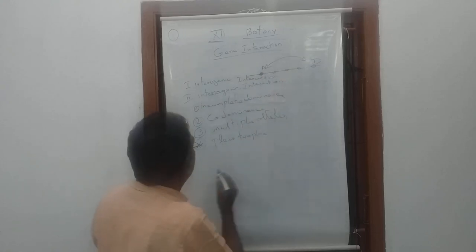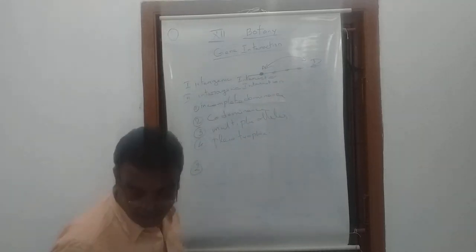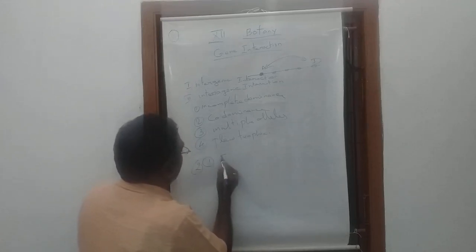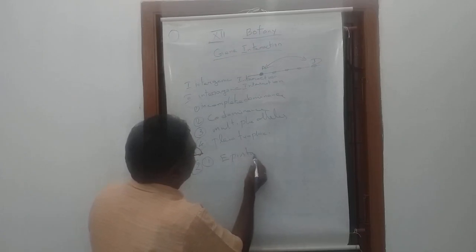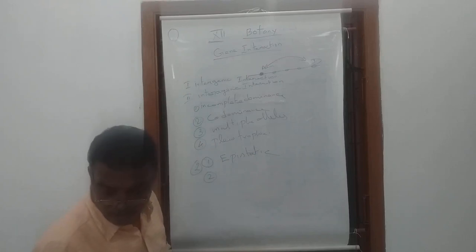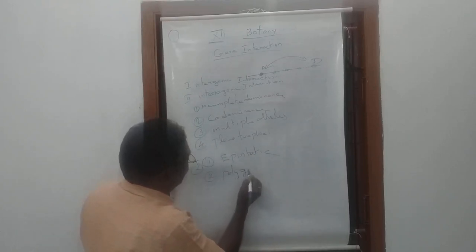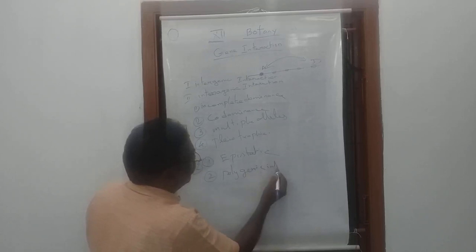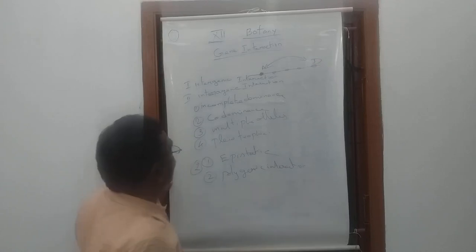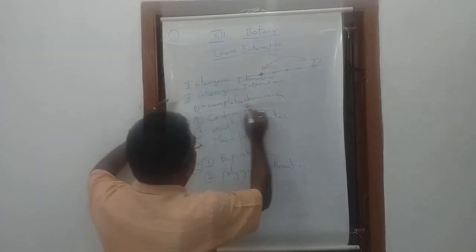In intergenic interaction, there are two types: one is epistatic interaction, and another one is polygenic interaction. In this chapter, we study incomplete dominance from intragenic interaction.